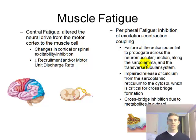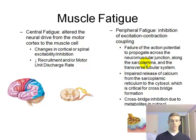Another peripheral fatigue mechanism involves metabolites in the cytosol. Some common metabolites are hydrogen ions, which reduce the pH, and phosphate, which is produced when ATP is broken down. When ATP is used, it gets broken down to ADP and phosphate, and these phosphate molecules can cause fatigue.